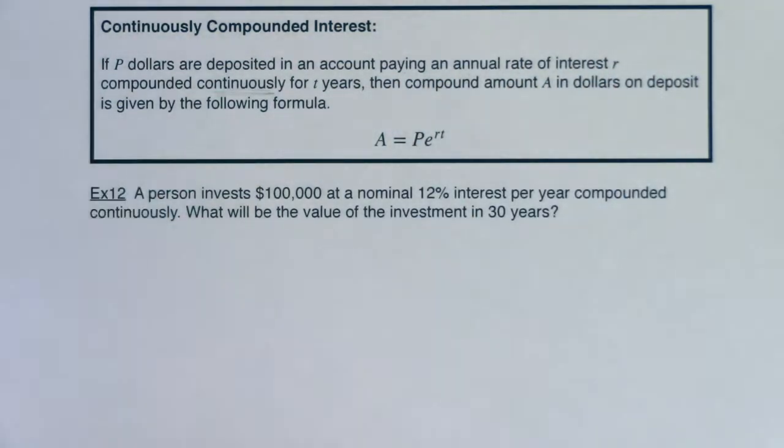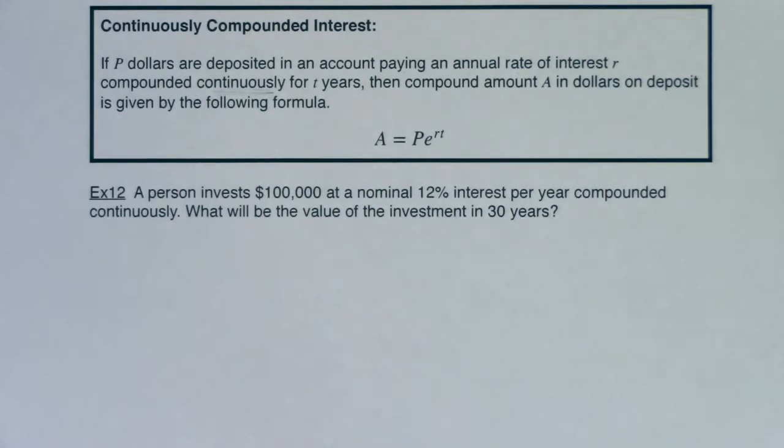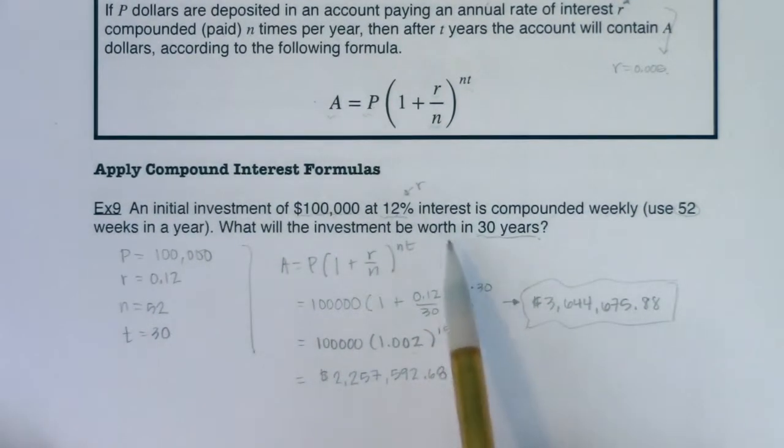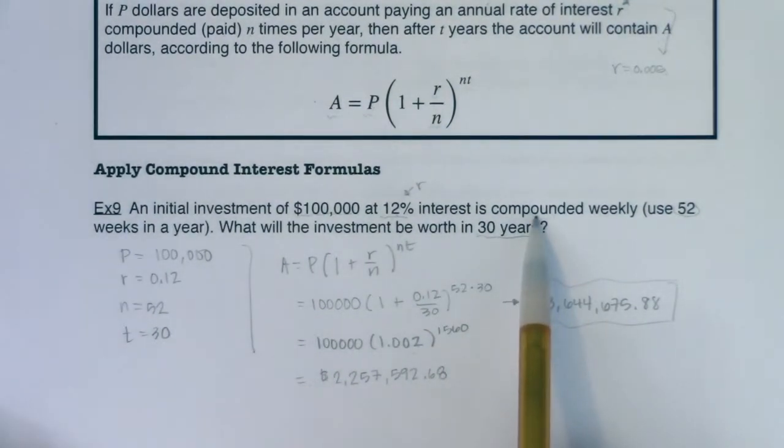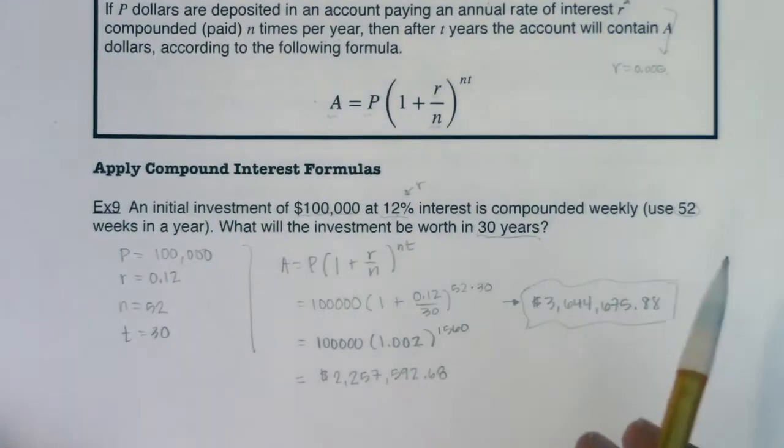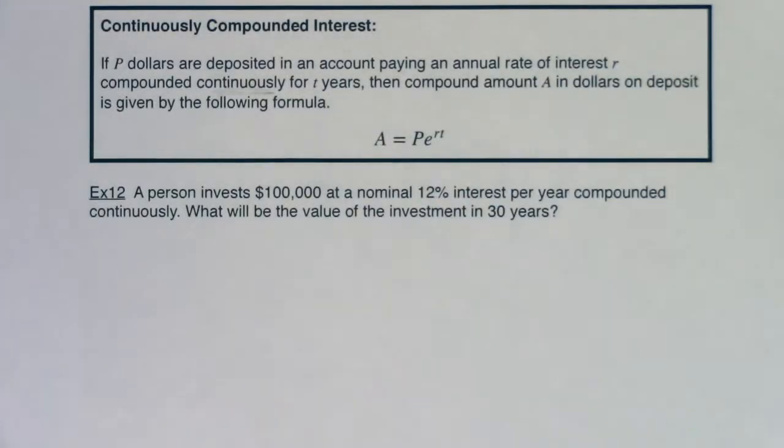Let's read through this problem. It's the same setup that we had in example 9. If you'll recall, in example 9, we were getting interest compounded weekly and we wound up with $3.6 million. That was pretty sweet. But I want you to see that we're going to end up with a little bit more because in example 12, we're going to compound continuously. So you're getting more interest on your interest.